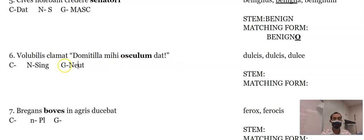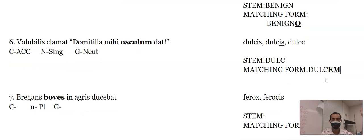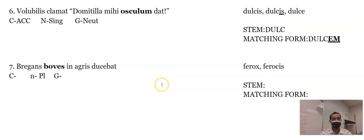Osculum, that's the word for kiss, neuter. That one I'll tell you because you probably don't remember. But this case, if it's Domitilla dat, she's the one giving. A kiss can't give somebody. A person can give a kiss. So that makes this one accusative. Dulcis has an is, so it's dulc. And then you'd put dulcem with an em.